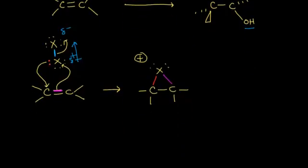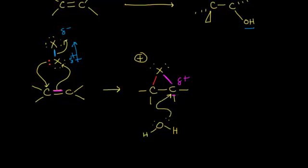Thinking about the cyclic halonium ion, the highly electronegative halogen attracts electron density from the adjacent carbon, making that carbon partially positive with some carbocationic character. In the next step, water comes along and functions as a nucleophile — one of its lone pairs nucleophilically attacks that electrophilic carbon, kicking the electrons off onto the halogen.